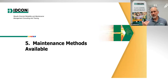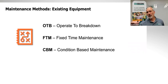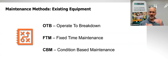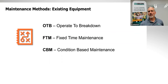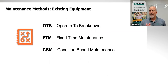What we need to do in our preventive maintenance for each piece of equipment is work on one of three maintenance methods. You can operate equipment to breakdown, do fixed time maintenance — meaning you replace it on a regular interval — or do condition-based maintenance, where you find the problem and when you find it, you fix it.